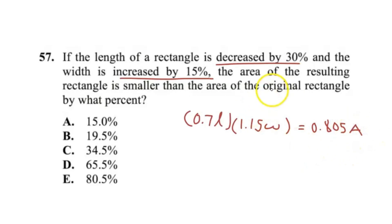So it wants smaller than the area of the original rectangle by what percent. It's not 80.5% because in fact, to find that value, we would have to subtract 0.805, or express this as a decimal, away from 1, 1 representing 100%. That'd give us 0.195 or 19.5%, giving us B as our final answer.